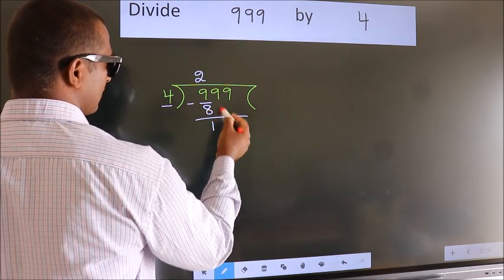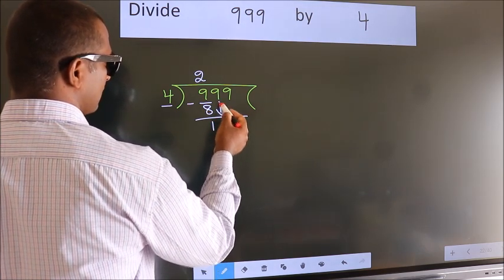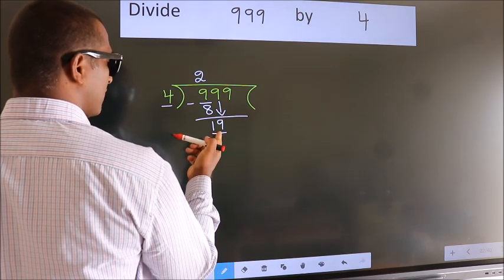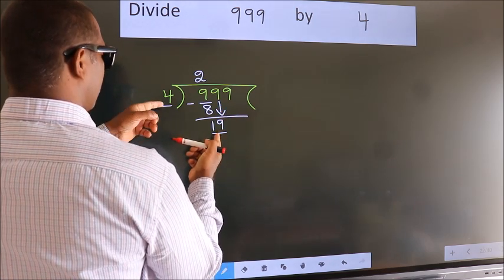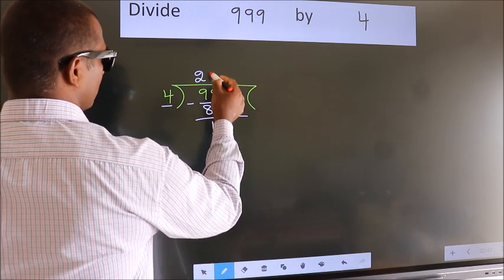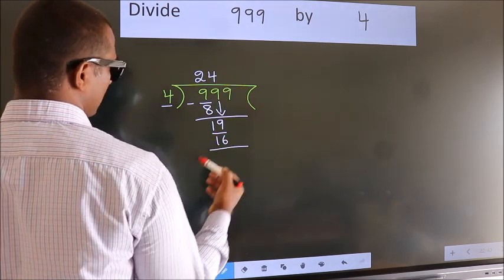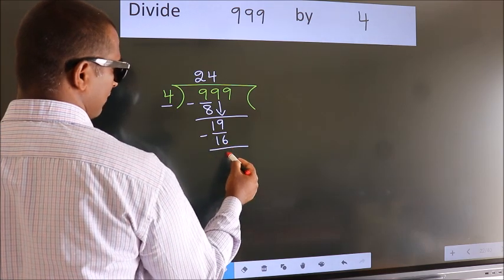After this, bring down the beside number. So, 9 down. So, 19. A number close to 19 in 4 table is 4 fours, 16. Now we subtract. We get 3.